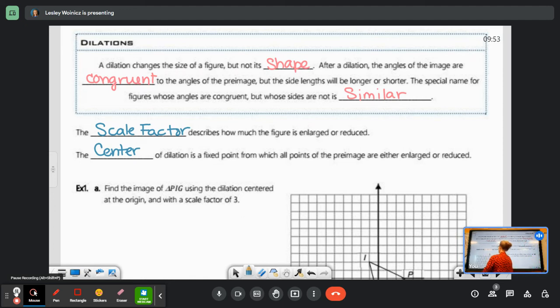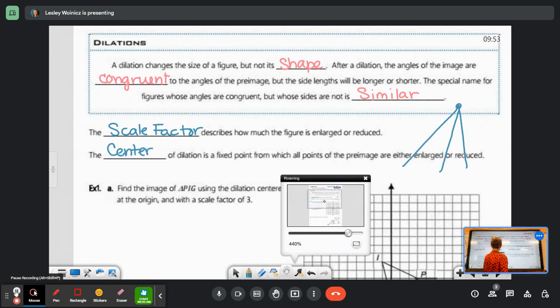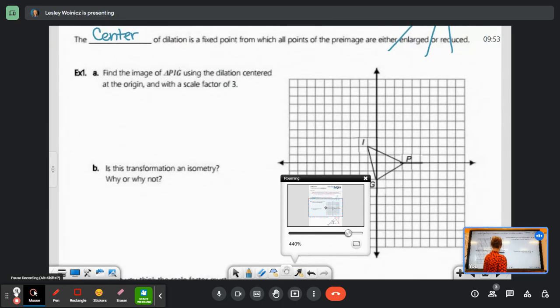The center of dilation is a fixed point from which all points of the pre-image are either enlarged or reduced. So if any of you are artsy-fartsy and have done any perspective drawing, you know how you have all of your lines disappear to a vanishing point? That's going to be our center of dilation.